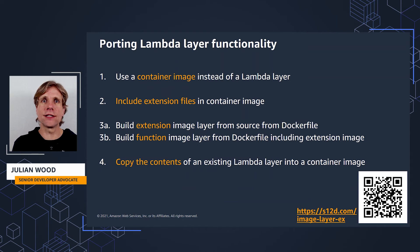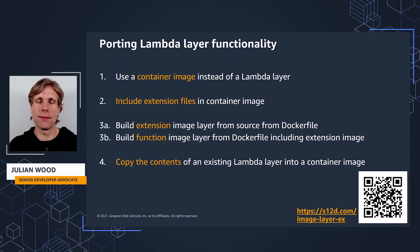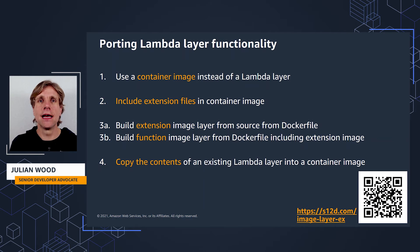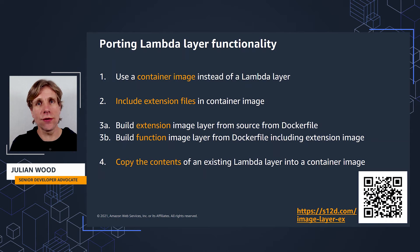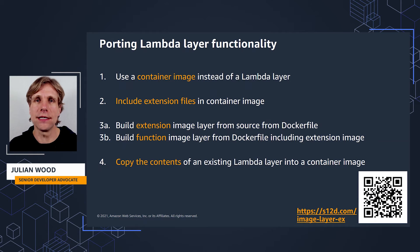There are a number of ways to add the files you need from layers and extensions to your images. An extension publisher can have a container image format version of a Lambda layer — instead of adding a Lambda layer, you add the container image layer to your function build process. As Lambda layers and extensions are simply files, if you have the code you can include the extension files in the container image. In a two-step process, you can package just the extensions as a container image and share them, and then add these container image layers to your Lambda function when you build it. If there's an existing Lambda layer without a corresponding container image version, you can extract and copy the contents of the existing Lambda layer into your function image. I'll go through each approach and show you how it works.